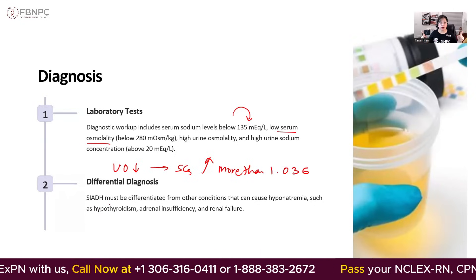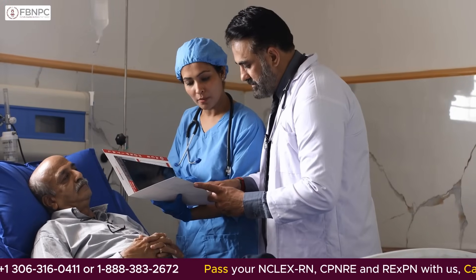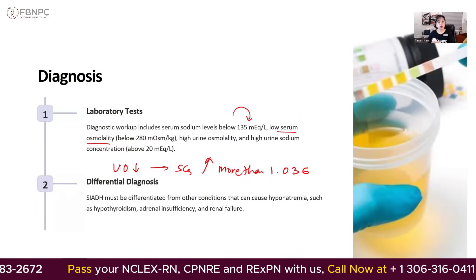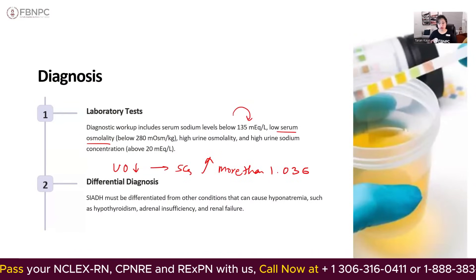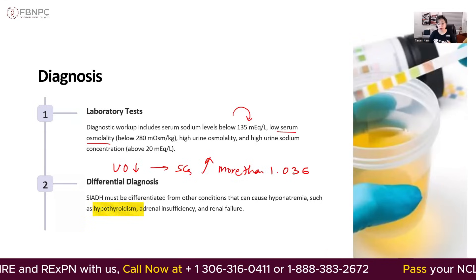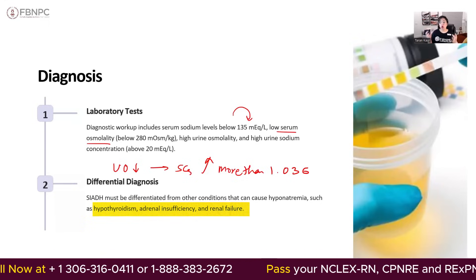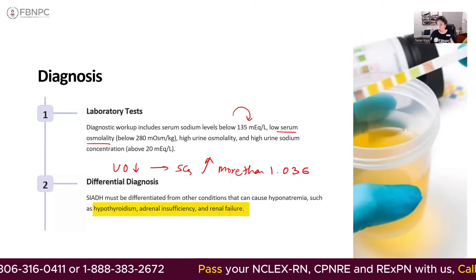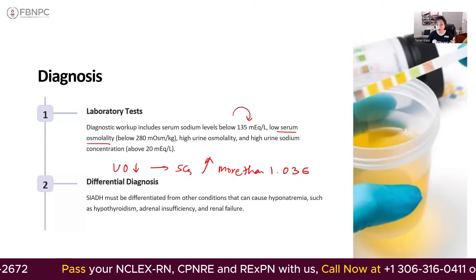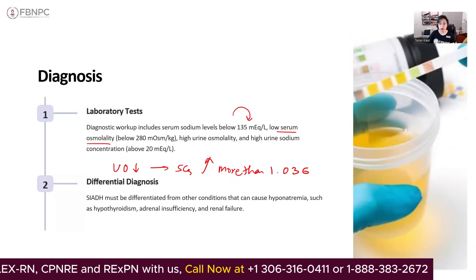We have to connect the dots. You can't just look at low sodium and say the patient has SIADH. You have to look at other lab values and conditions — sometimes low sodium can be caused by hypothyroidism, adrenal insufficiency, or renal failure. All those conditions can also produce similar findings, so we must figure out what is happening and perform a differential diagnosis before moving on.